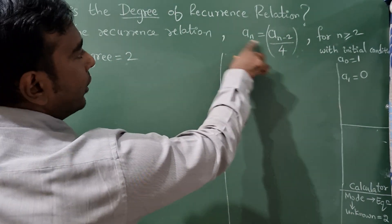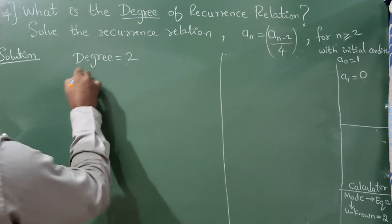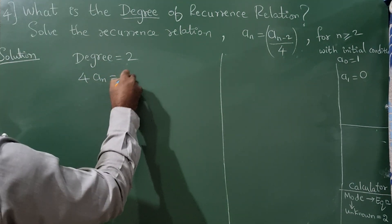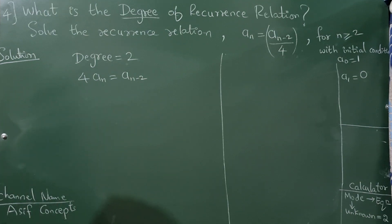Now for this I am going to cross multiply: 4a_n = a_(n-2).